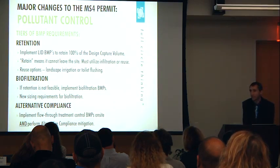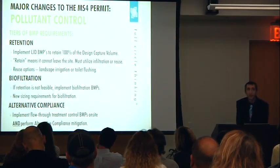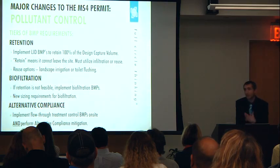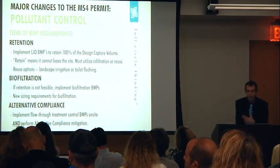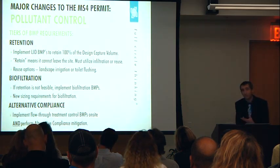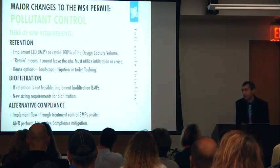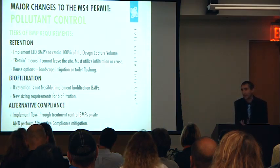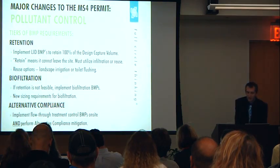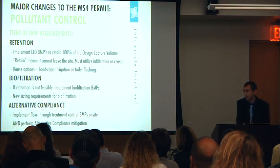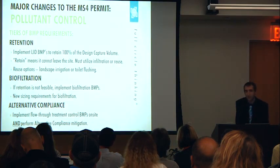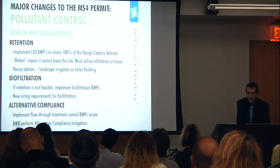The permit and BMP Design Manual outline three tiers of treatment. You're supposed to comply with the highest tier that is feasible for your site, then step down if needed. The top tier and preferred method is on-site retention — implementing LID or Low Impact Development BMPs to retain 100% of the Design Capture Volume on your site. 'Retain' means it can't leave your site, so you have no runoff from DCV-sized storms. The BMP Design Manual outlines infiltration into the soil or reuse on site as the possible disposal methods.